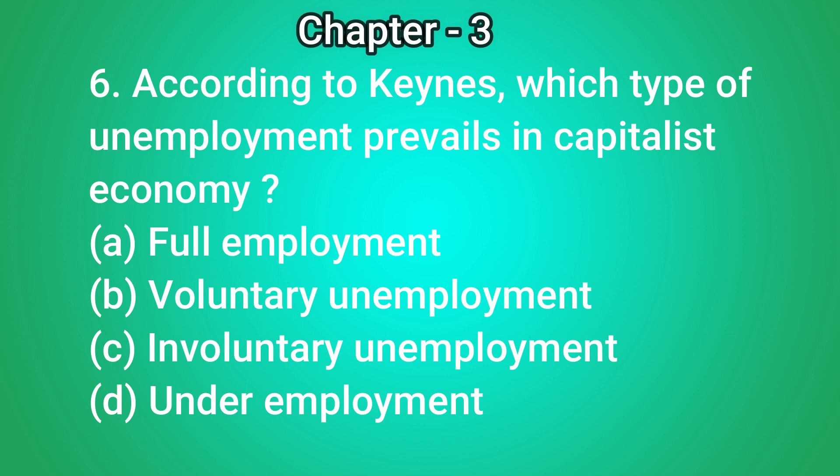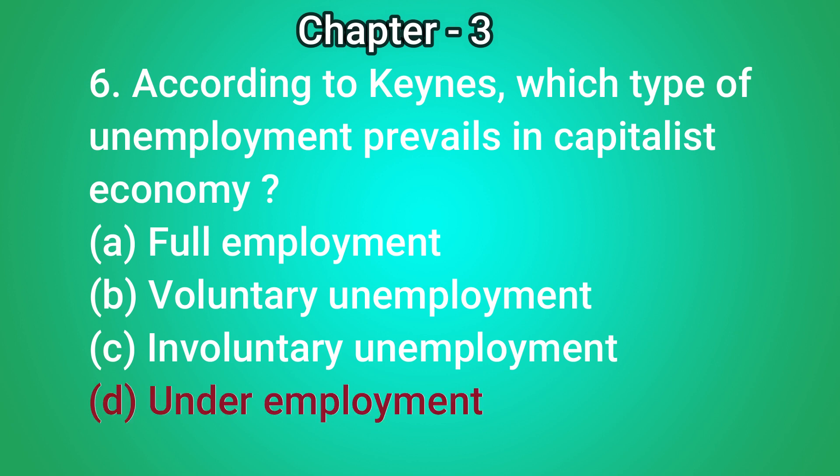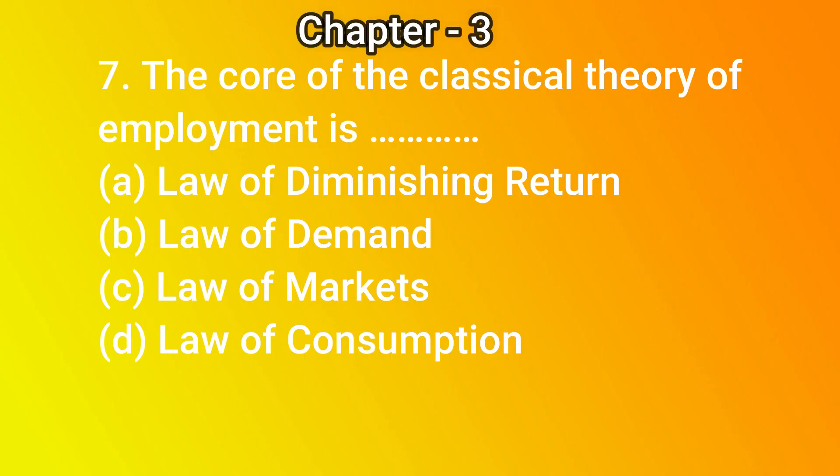...employment, (b) voluntary unemployment, (c) involuntary unemployment, (d) underemployment. The correct answer is (d) underemployment. Question number 7: the core of the classical theory of employment is — (a) law of diminishing returns, (b) law of demand, (c) law of...